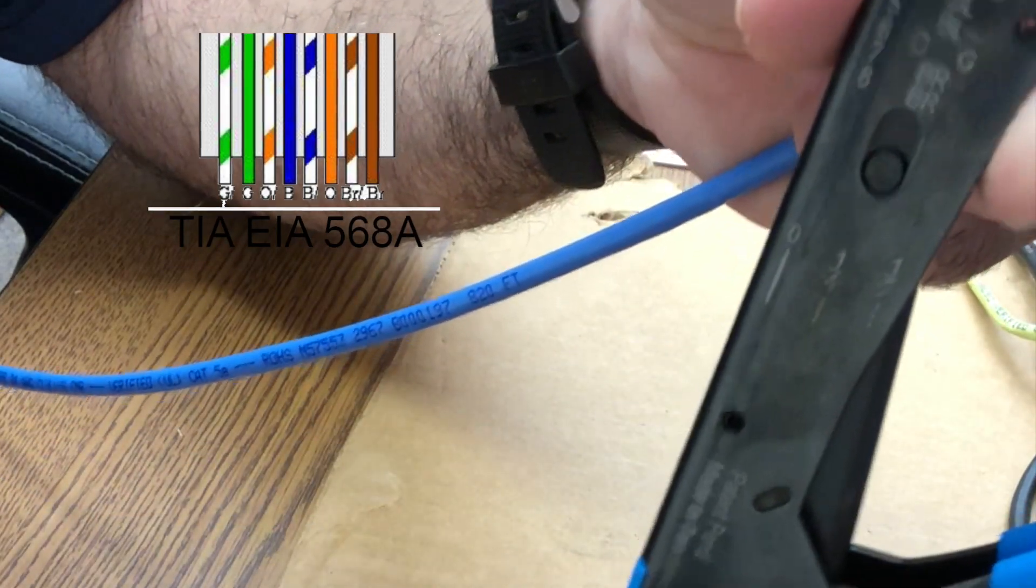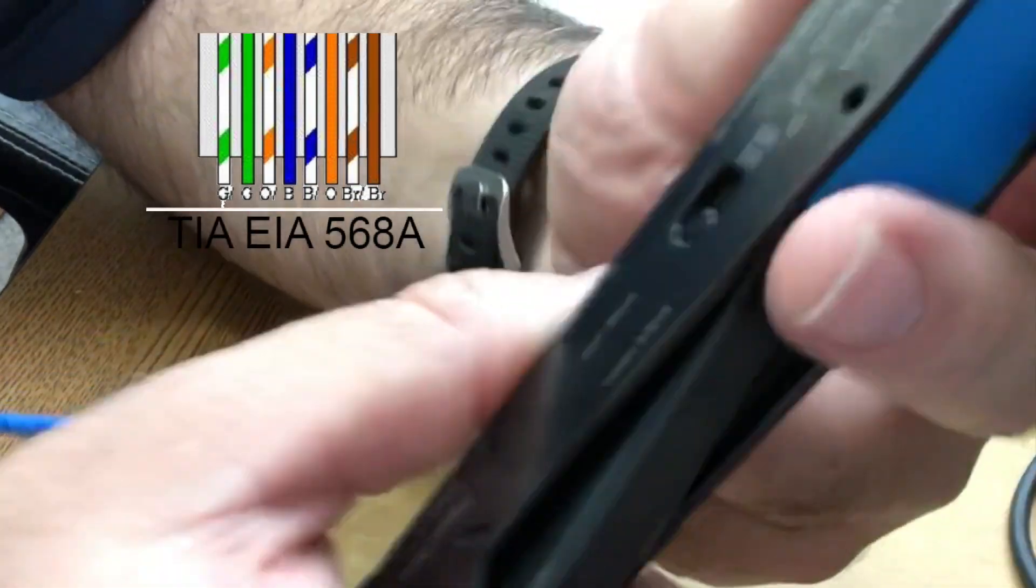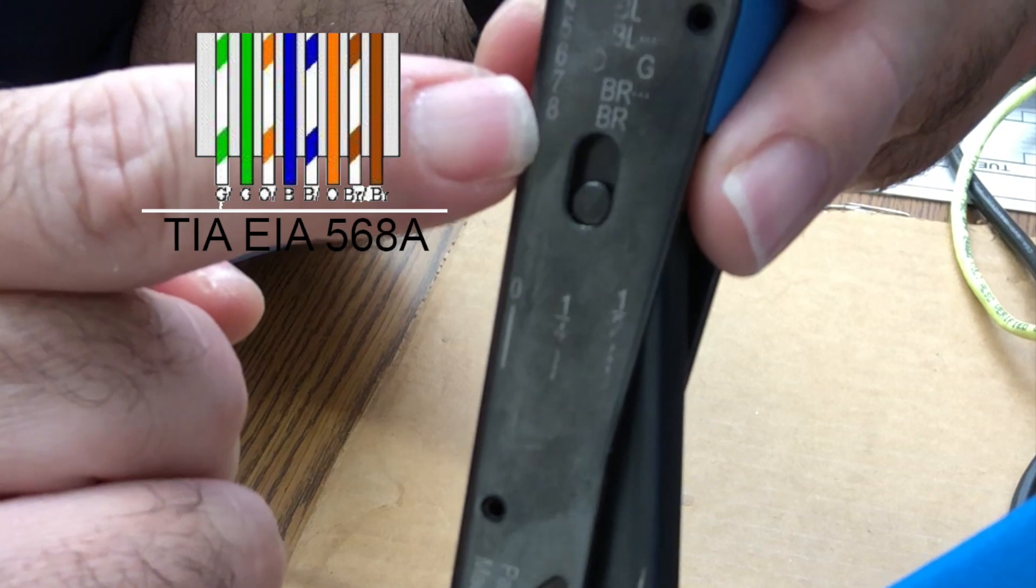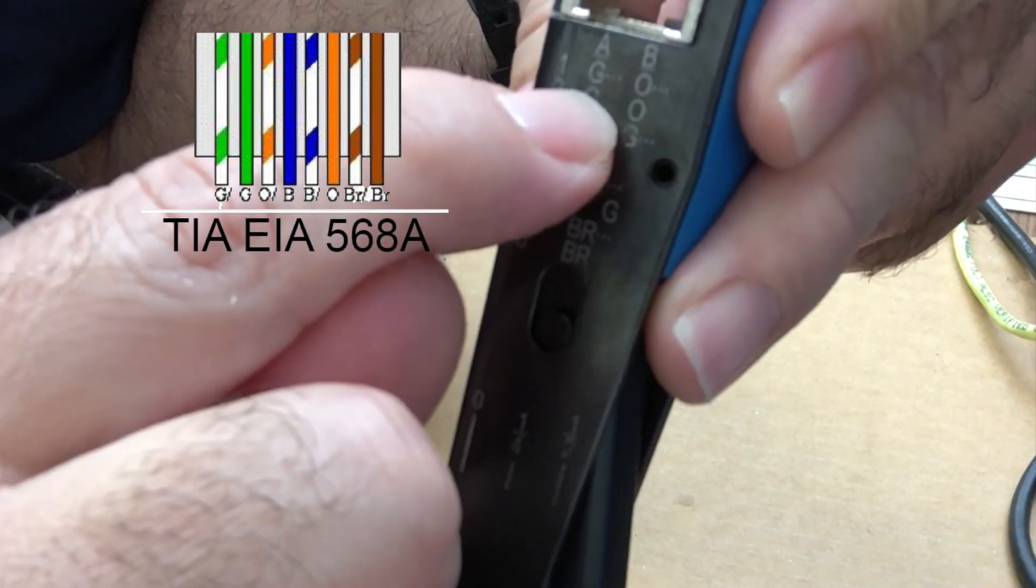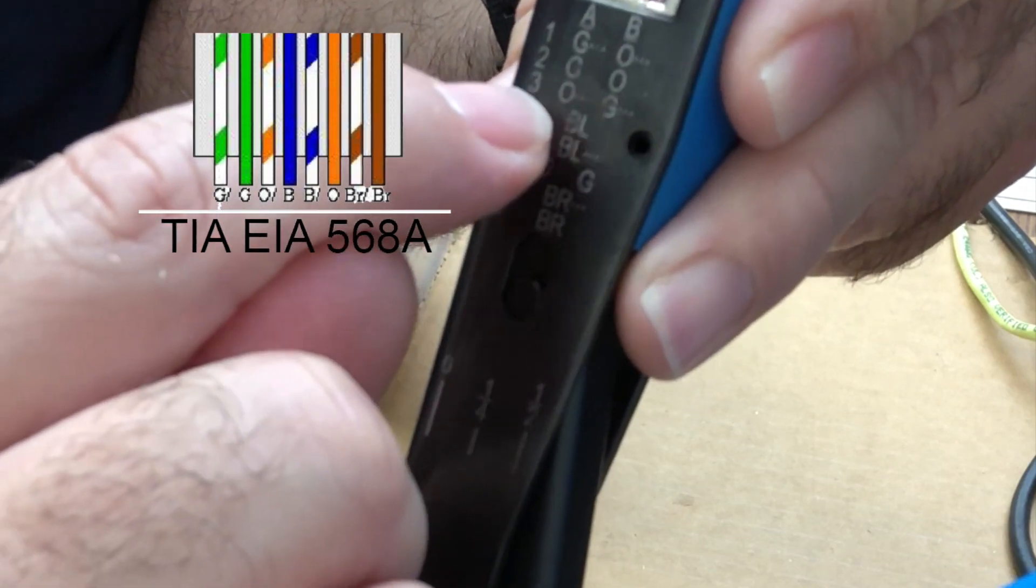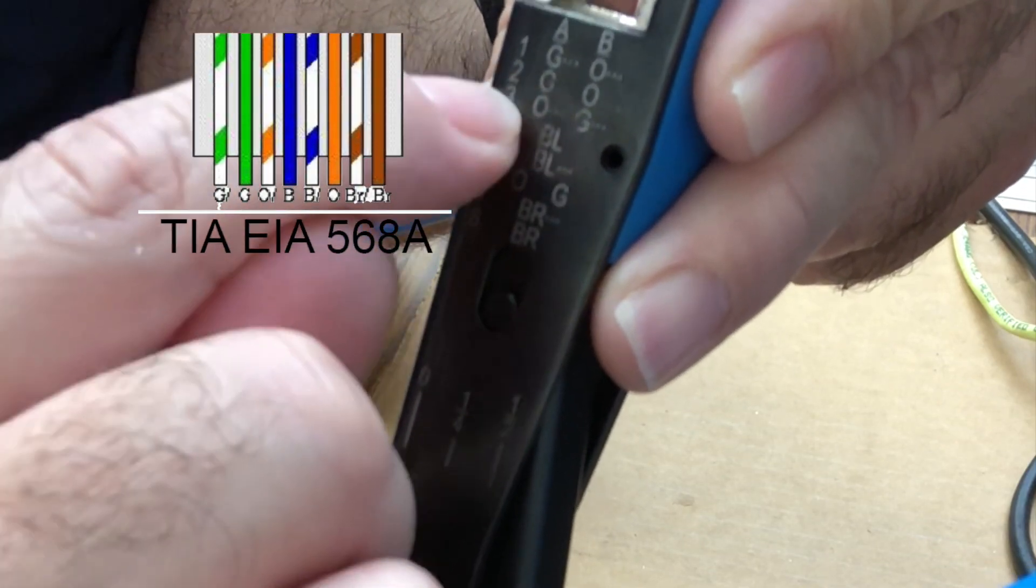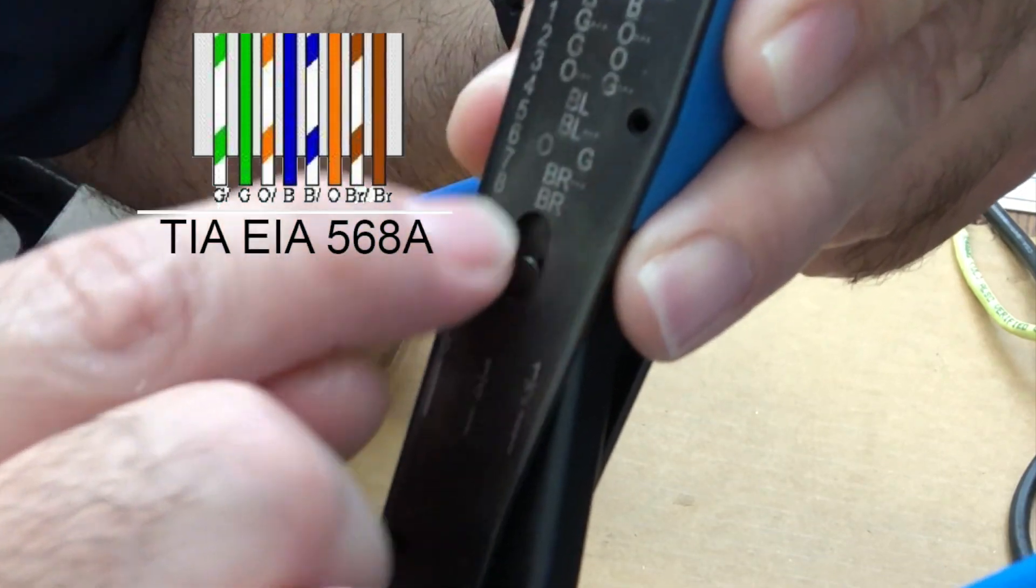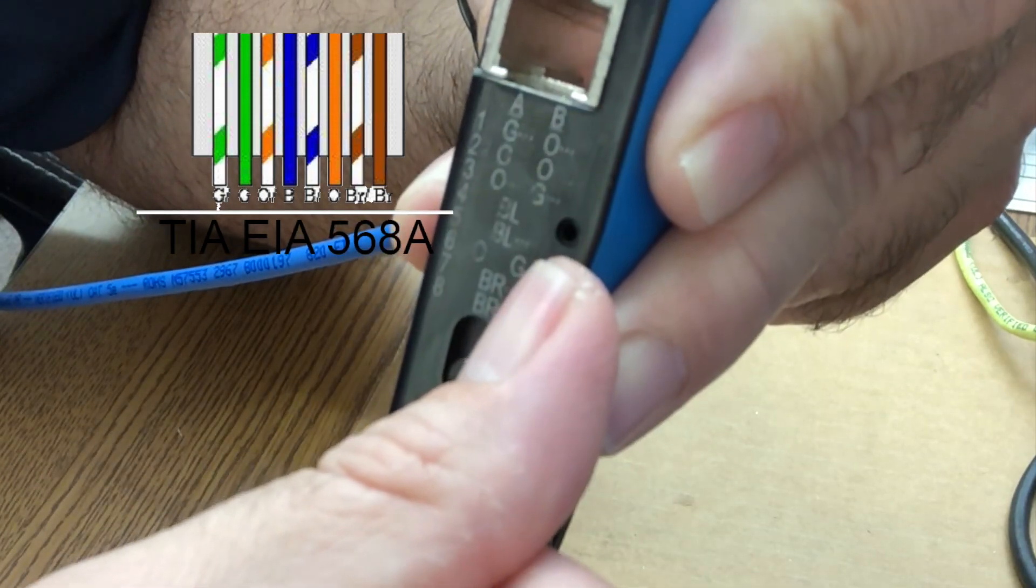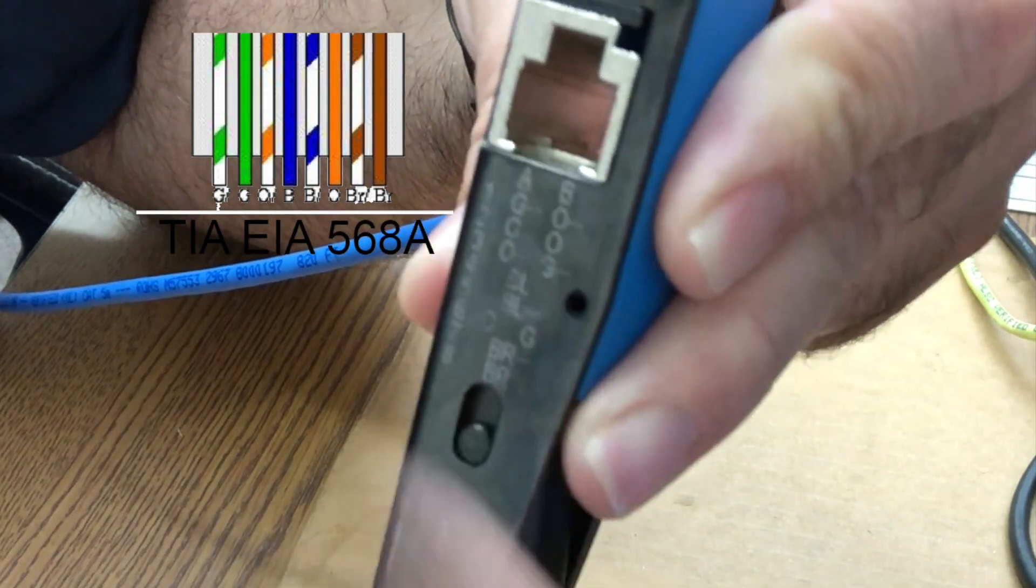When we go to terminate our cable we want to make sure that we got the right colors on the right side and they put a little handy guide right here. There's an A and a B there and then there's the numbers of the cables. G with dots mean that's a green with the stripe. If it's just a G that means that's a solid color and so forth. You got A standard on this side and B standard on the other side. So let's see if I can get it done.